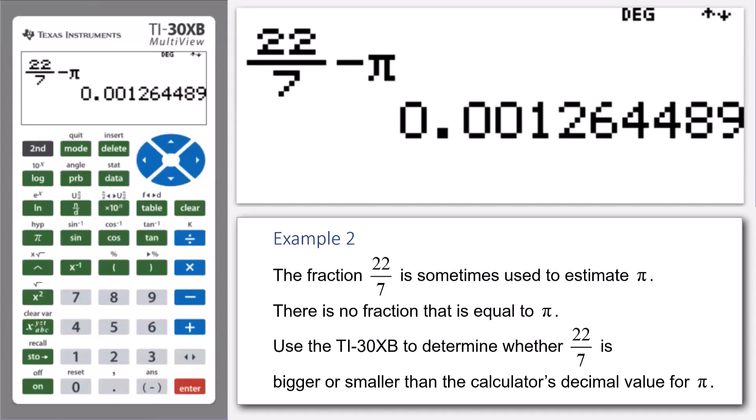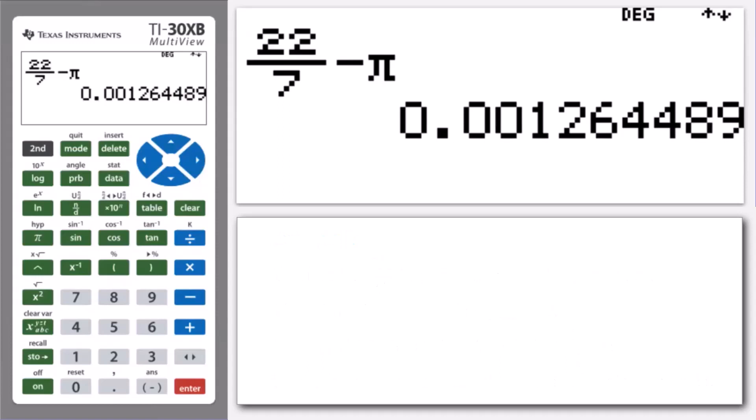This example helps to illustrate an important property: that if you have two numbers, a and b, that a minus b greater than zero means, therefore, that a is greater than b.